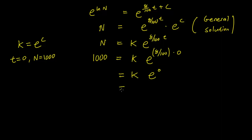This is just k e to the zero. Any exponential raised to the zero power is 1, so we just end up with k. This gives us that k is 1000.